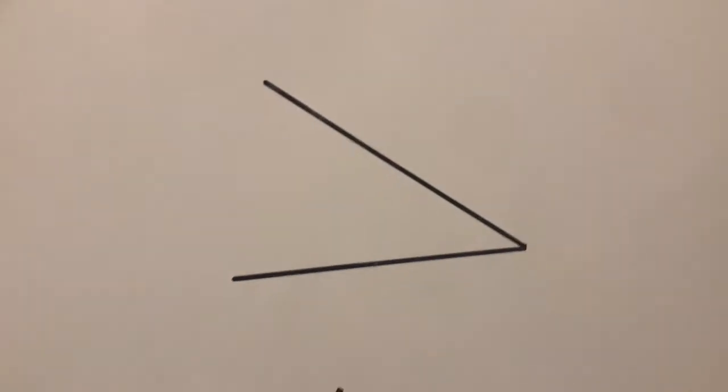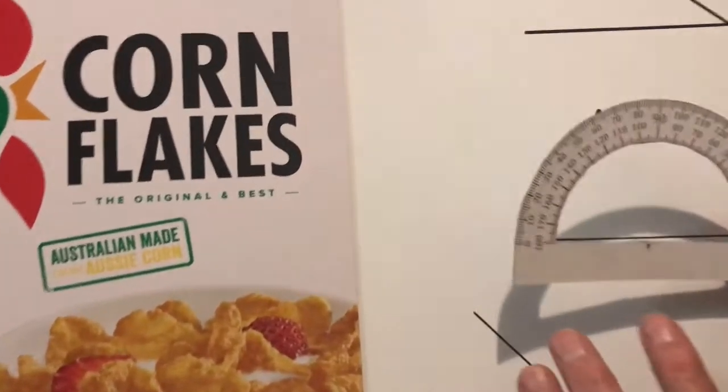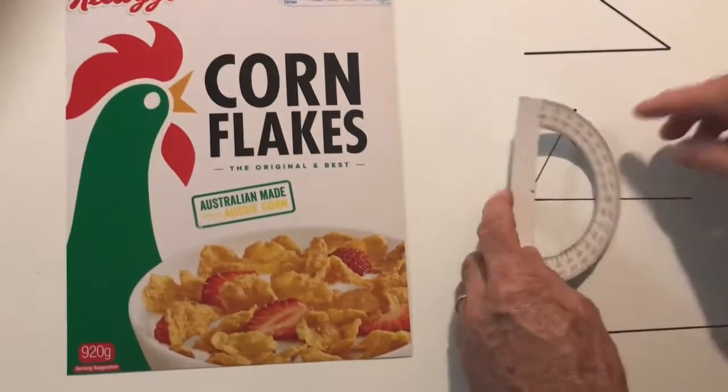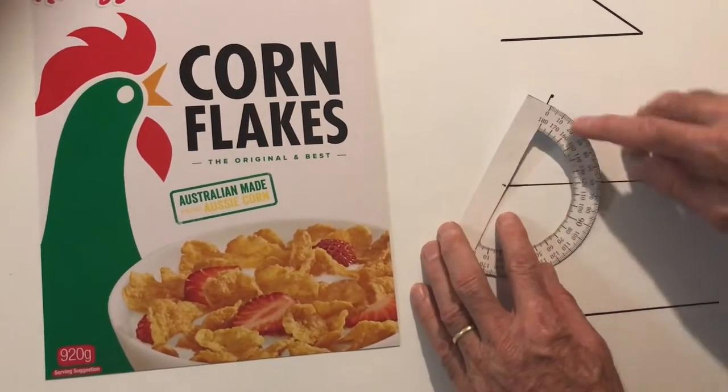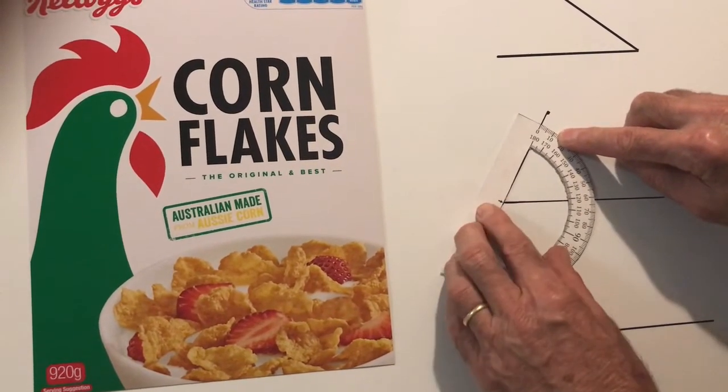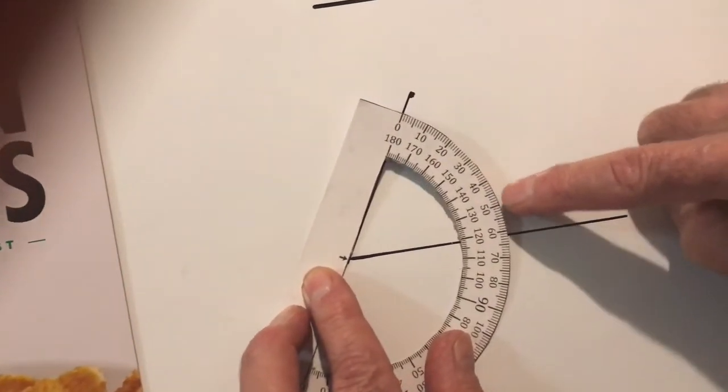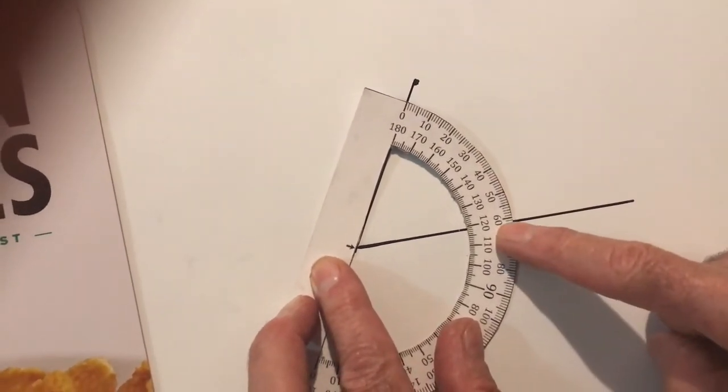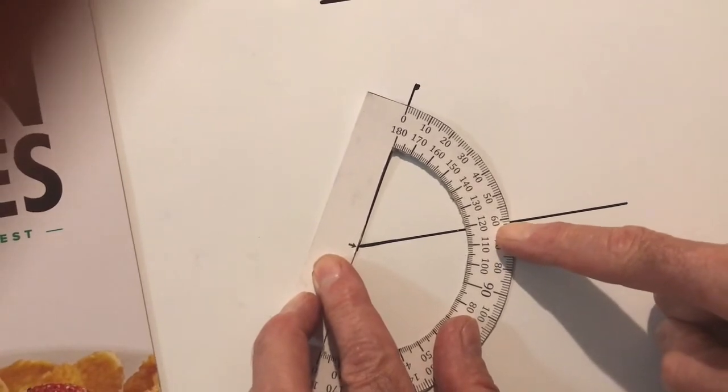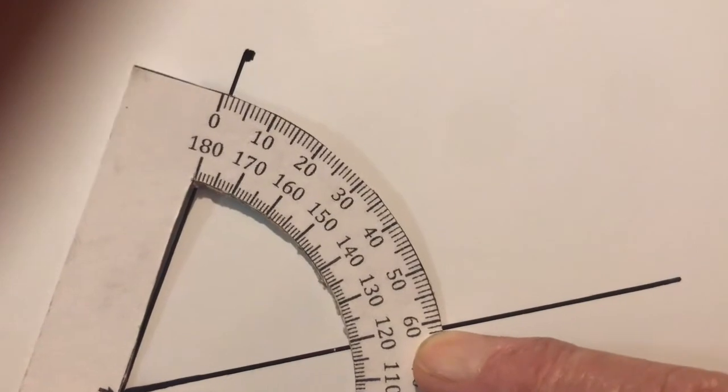Let's use the other protractor and go and look at the other angle. If I have a look at the other angle, to measure the way that I did I would have to turn my protractor on its side. I can still measure 10, 20, 30, 40, 50, 60, 61 degrees. There is an easier way to do this.